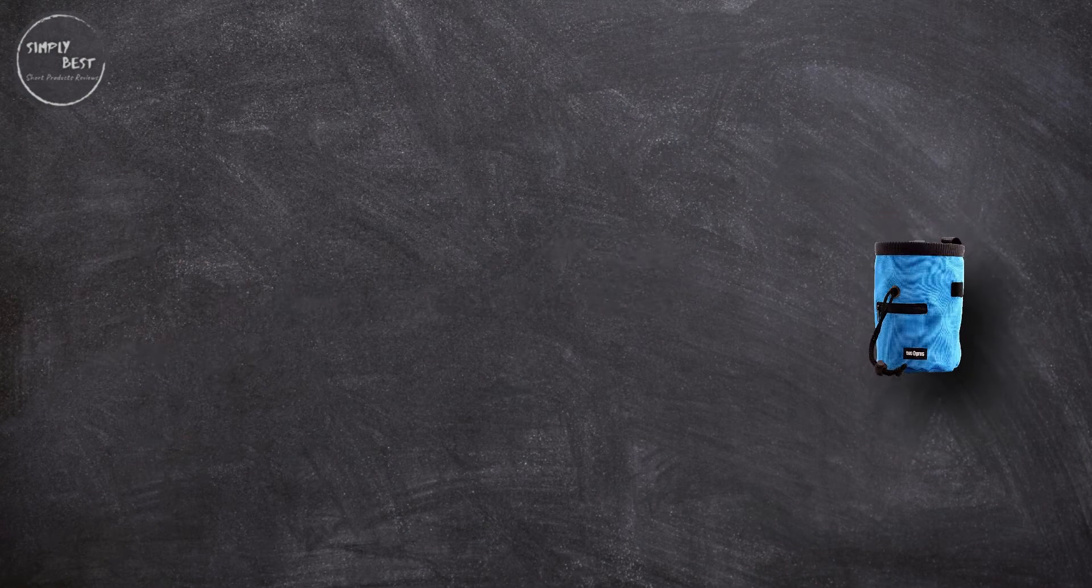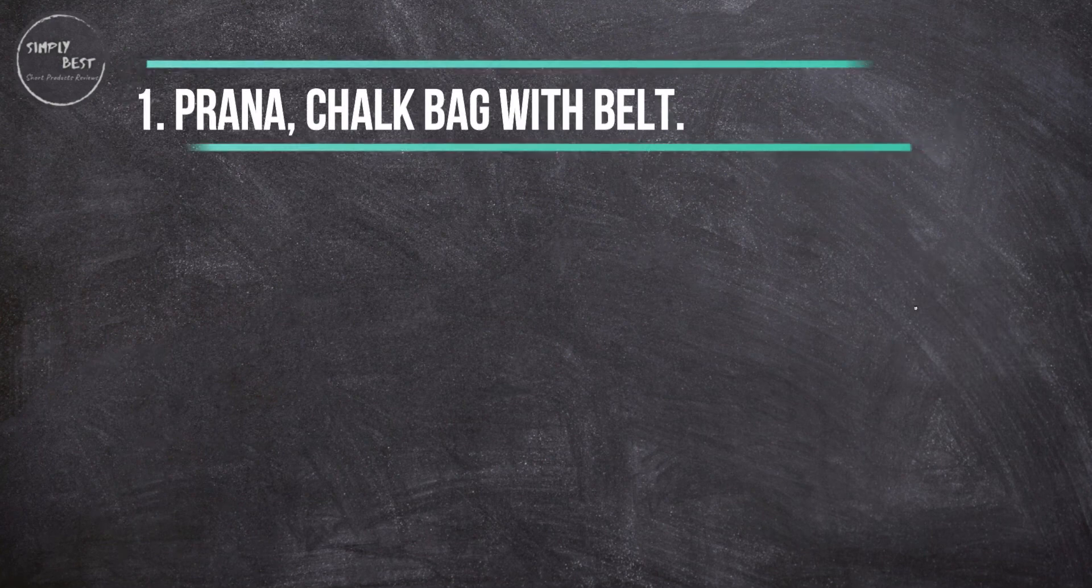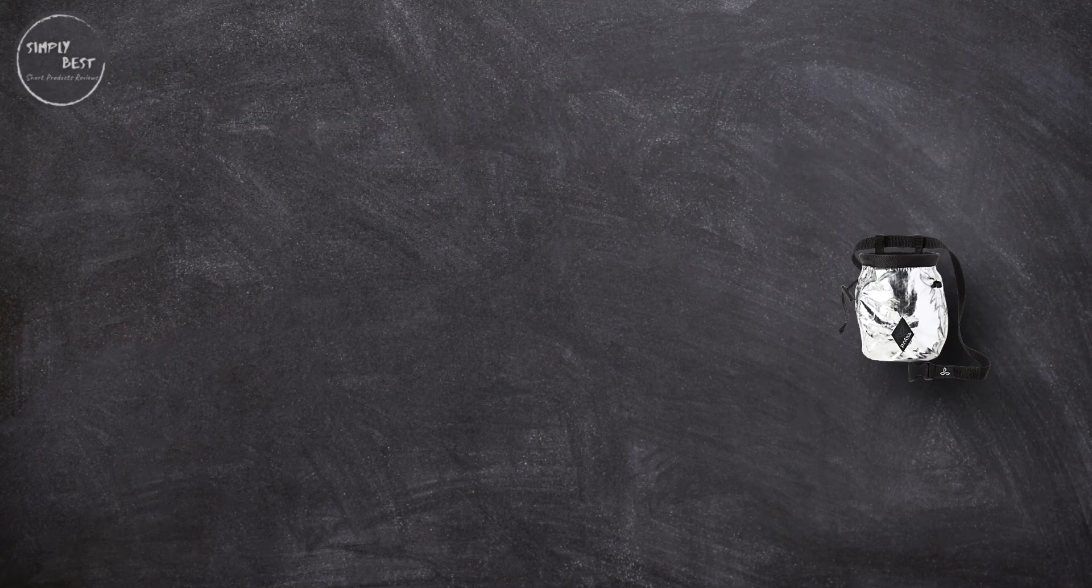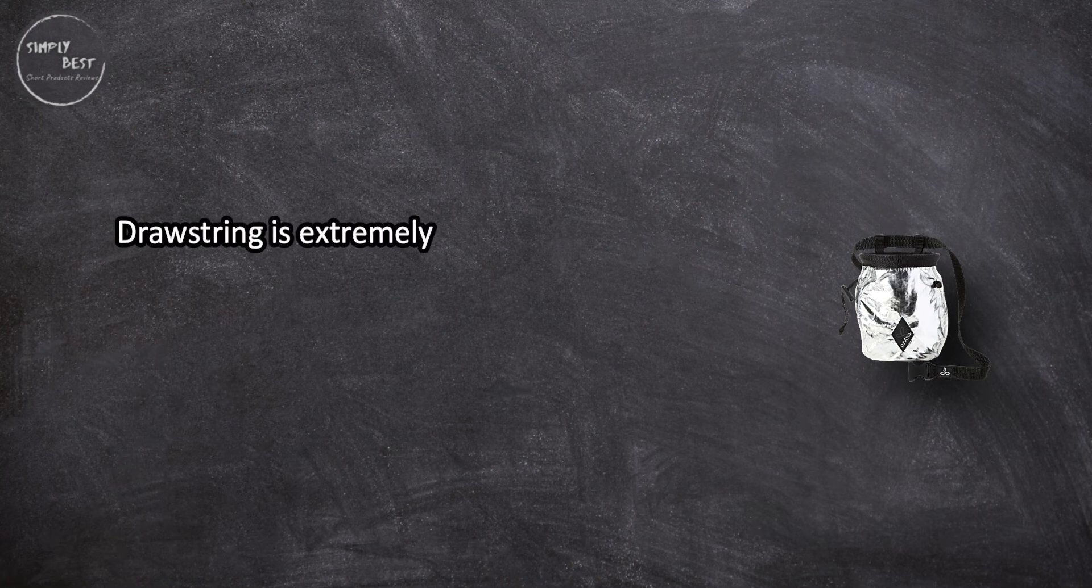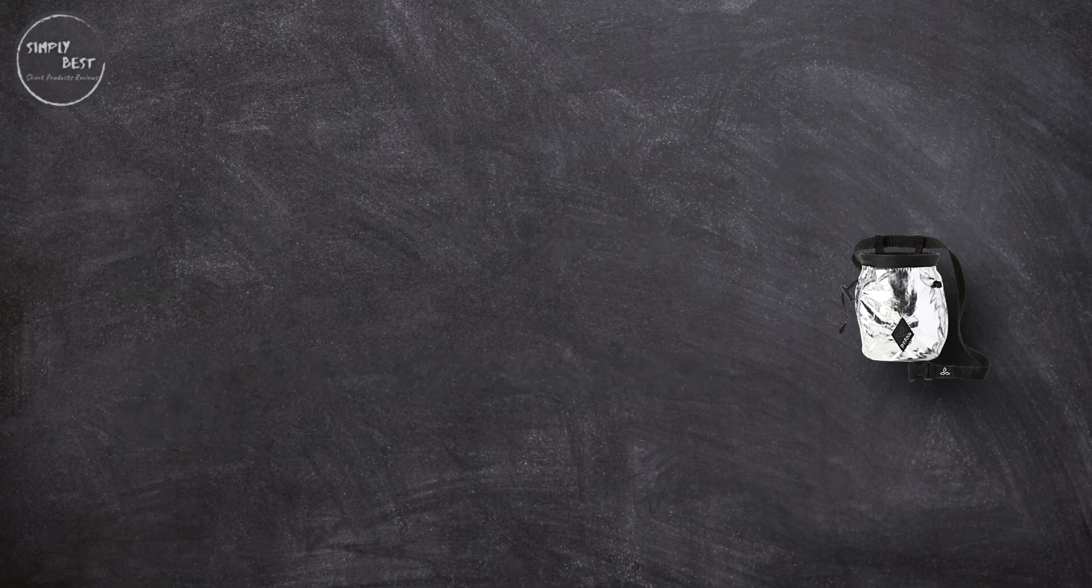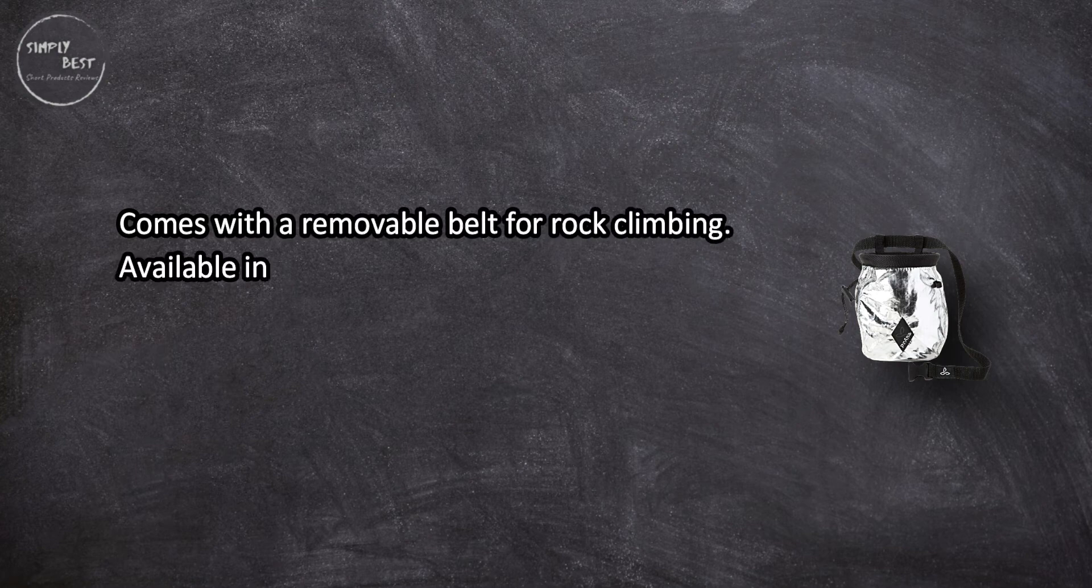Belt can be difficult to remove. At number one: Prana Chalk Bag with Belt. Drawstring is extremely effective at keeping in chalk. Customers love its lightweight portability and small size. Comes with a removable belt for rock climbing, available in multiple colors.